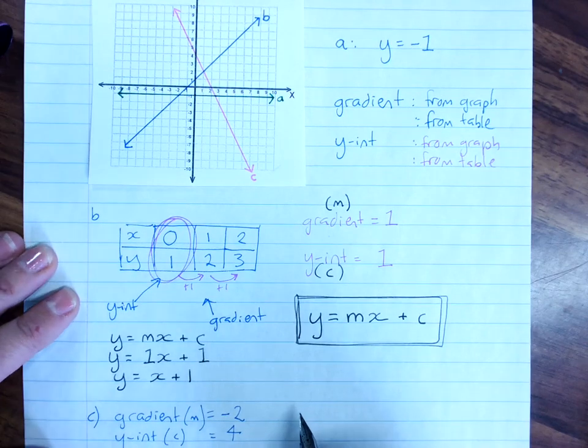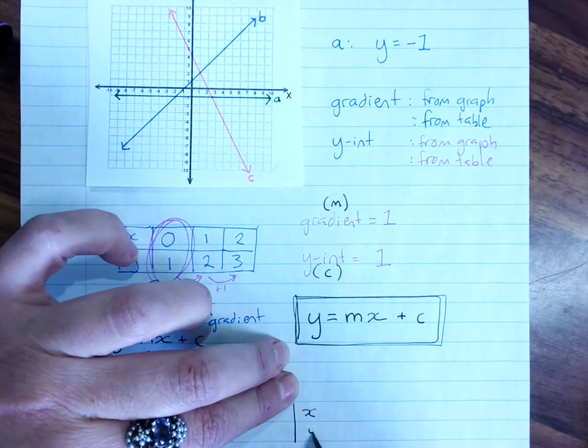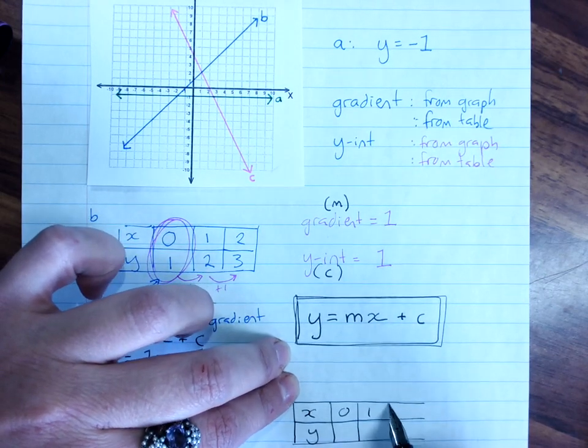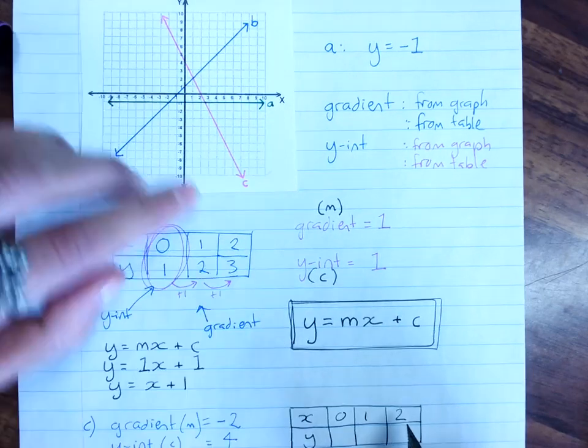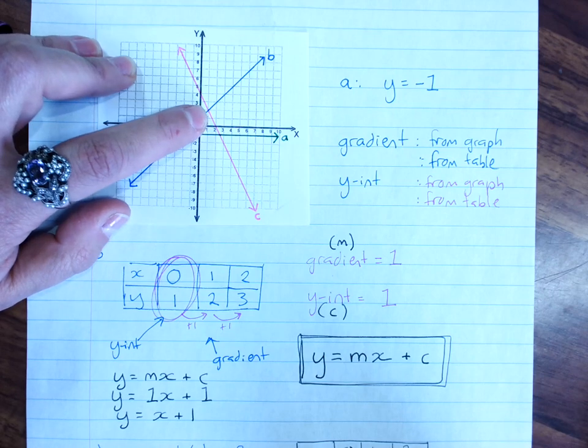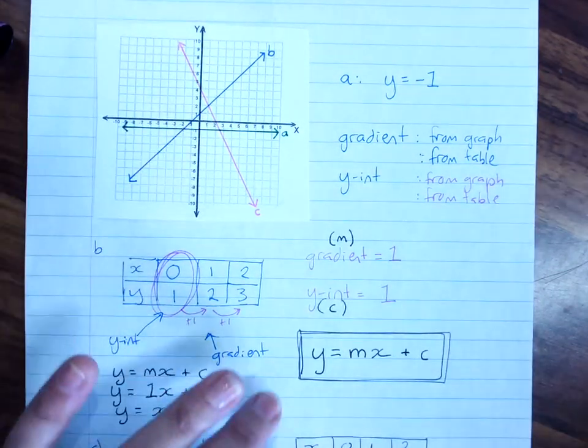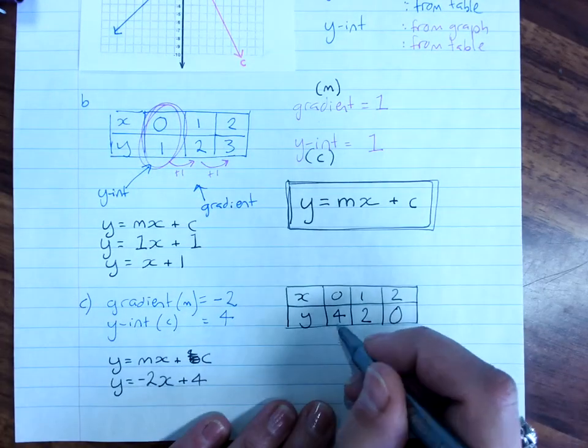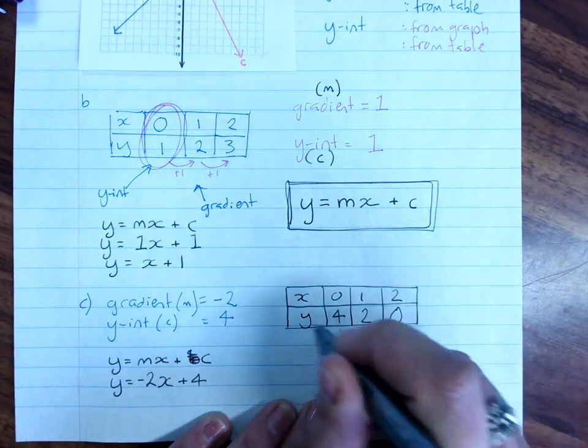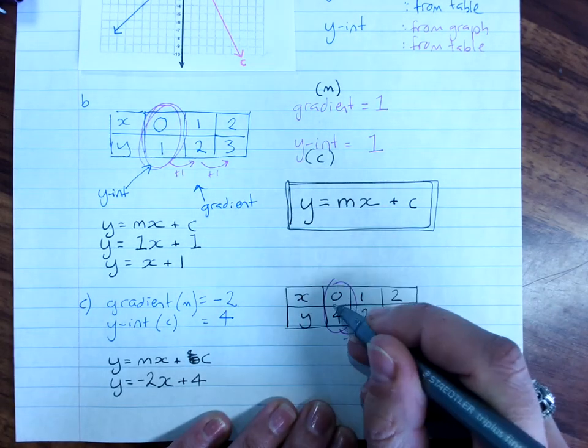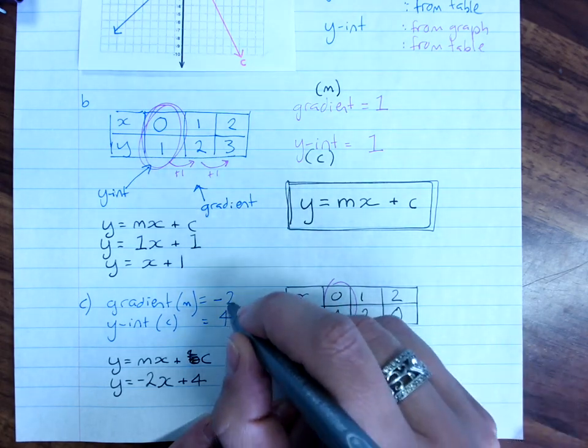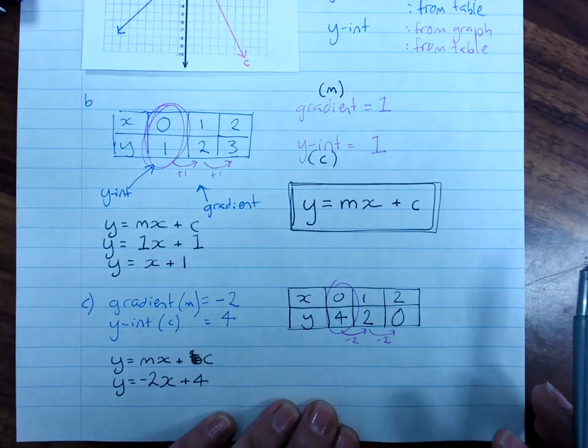x and y, 0, always have 0, 1 and 2. From my line, when x is 0, y is 4. When x is 1, y is 2. When x is 2, y is 0. And you look at the pattern, because this is the gradient as well. Minus 2, minus 2. Gradient is minus 2. y-intercept, where x is 0, is 4. I could get these from the table if I wasn't confident with the graph.